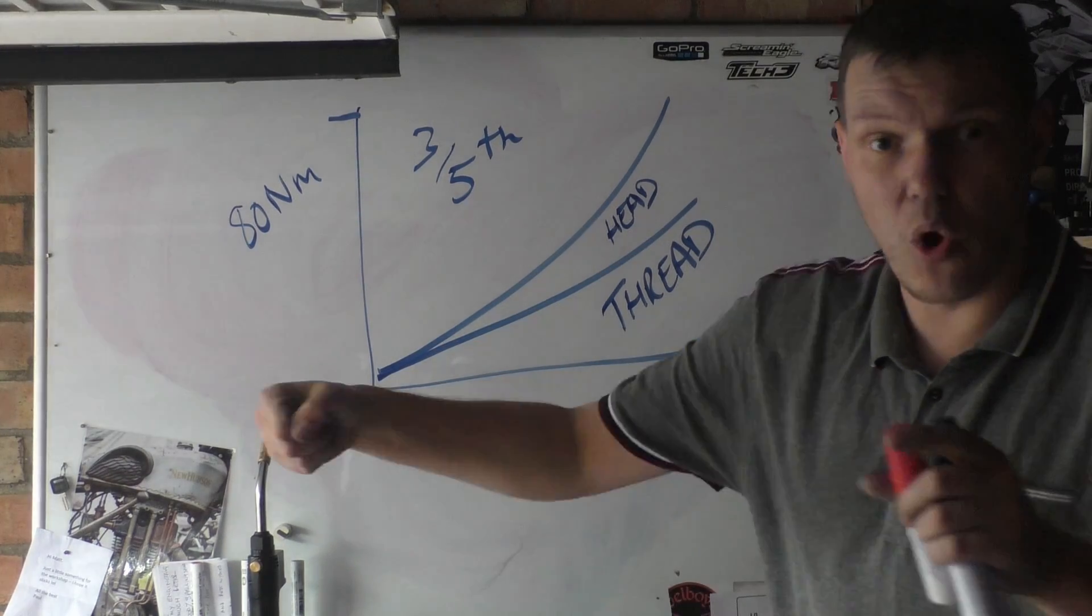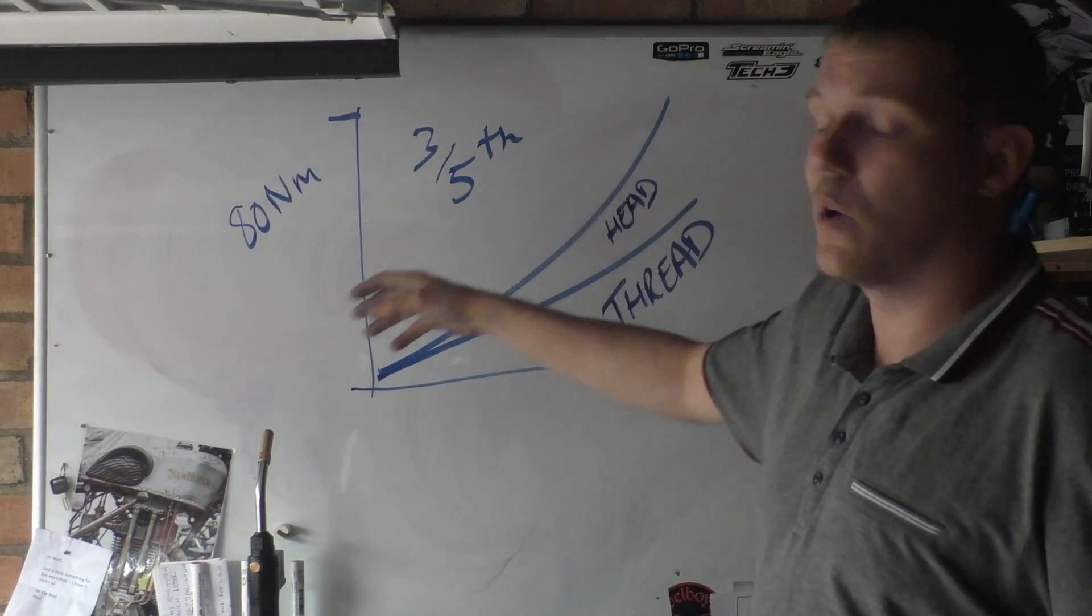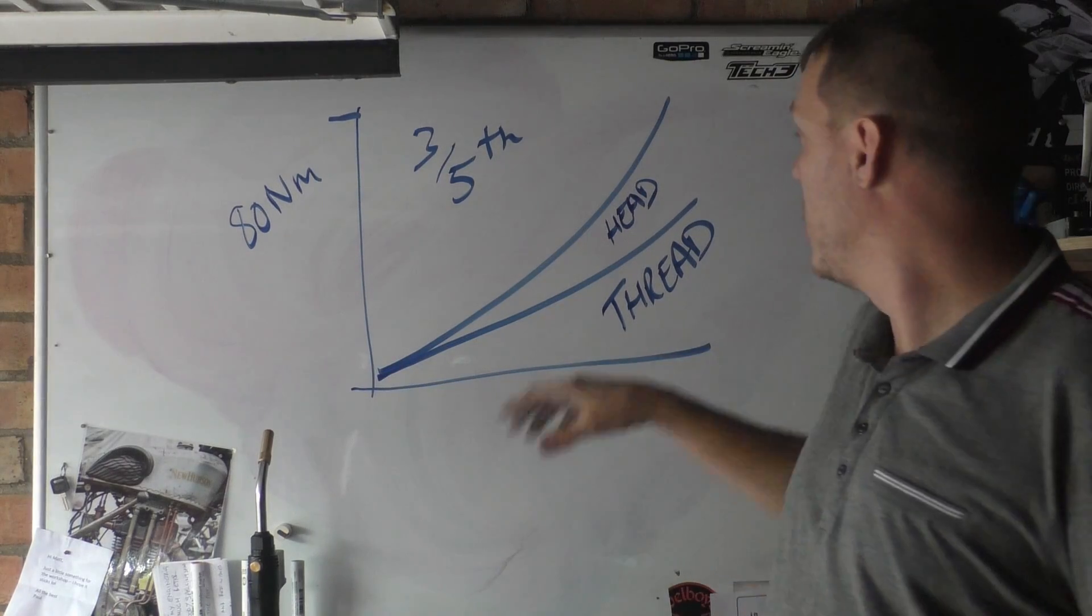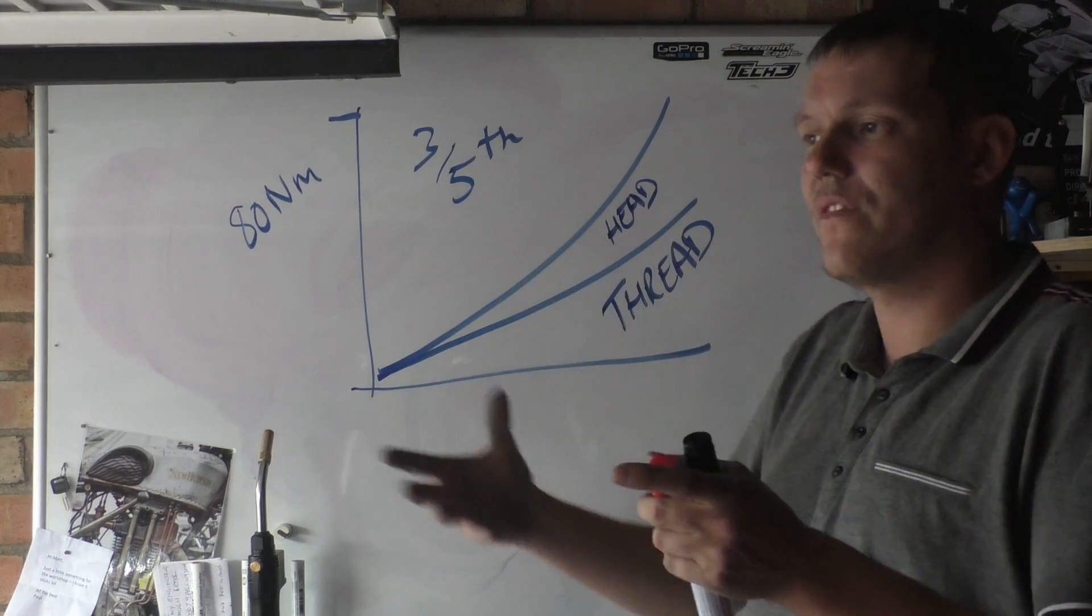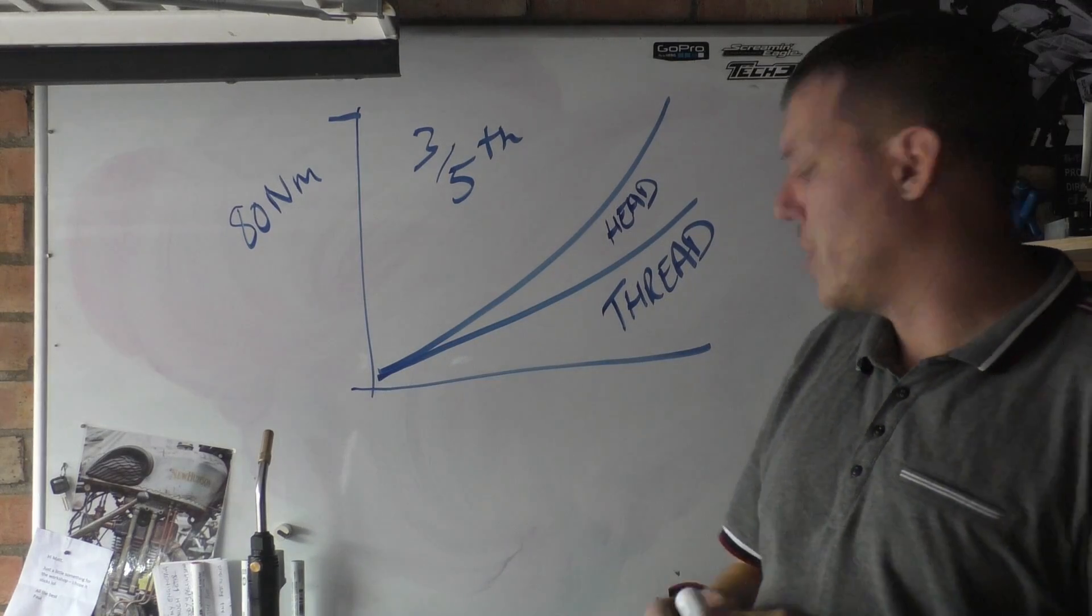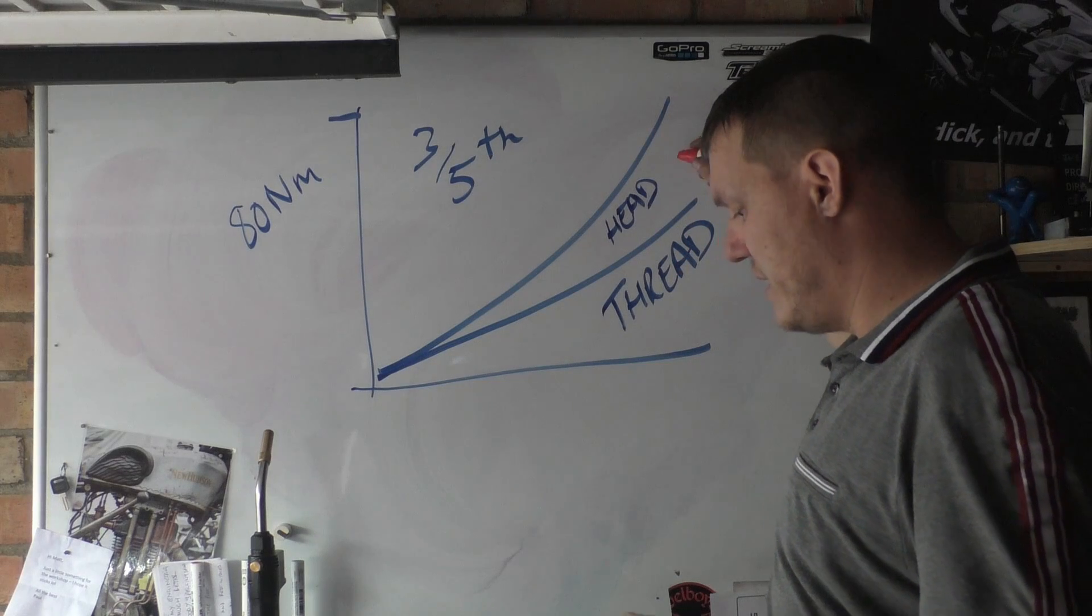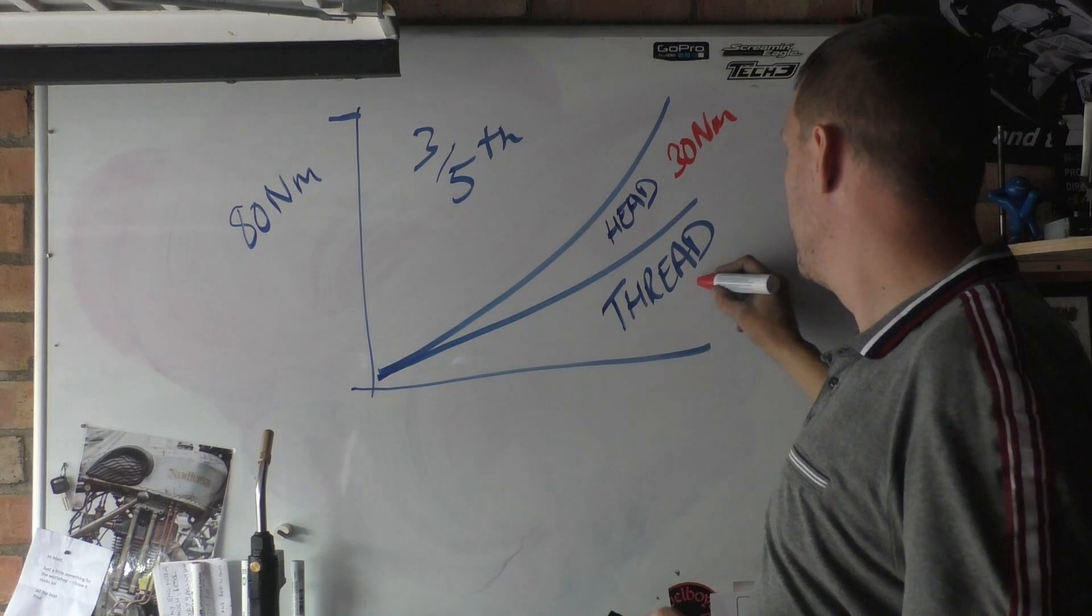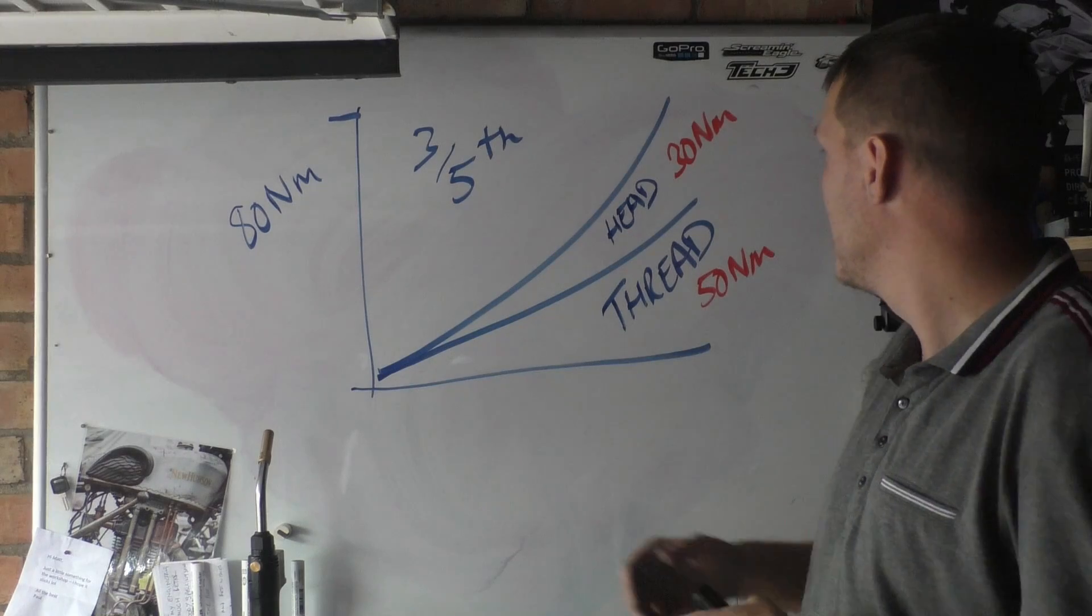So basically, when you torque a bolt, nearly all of the torque you're applying is divvied up between overcoming the friction between the threads and overcoming the friction of the head. This is final torque, and when you're winding it in, it's just threads. But I think it's like under head is 30 newton metres and the thread itself is 50 newton metres. Obviously, because there's a greater surface area for the threads.